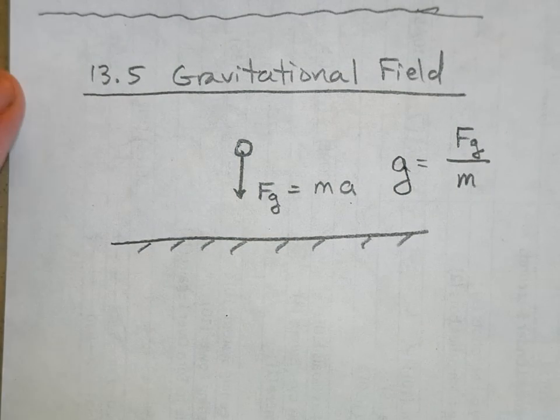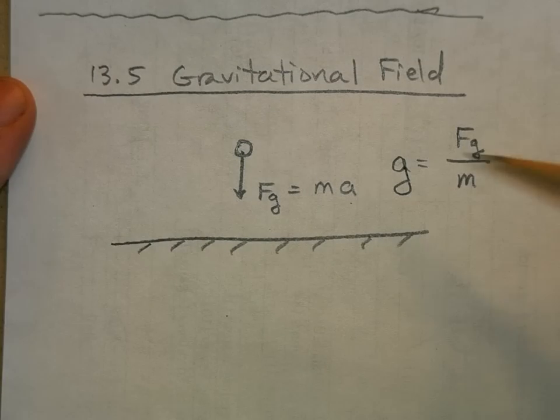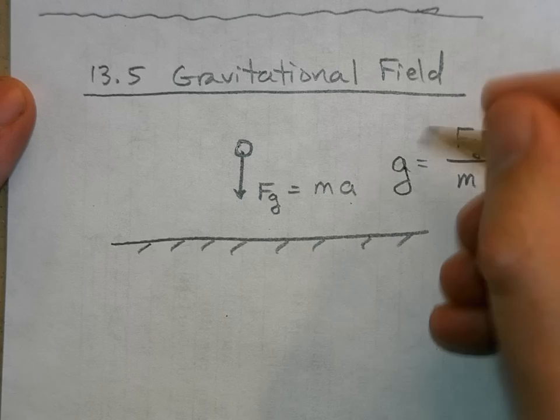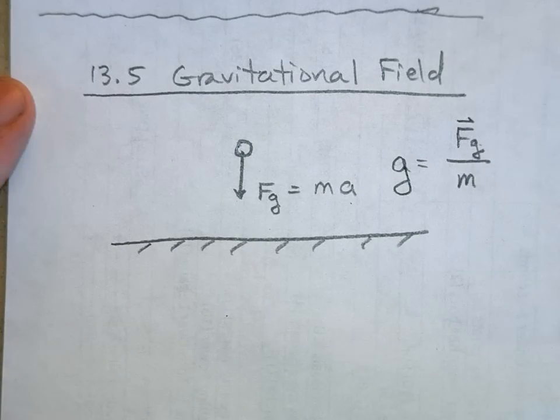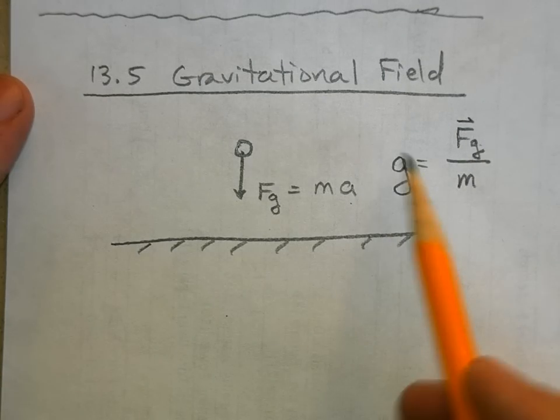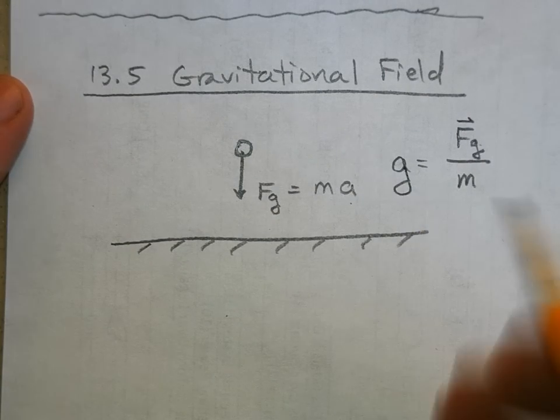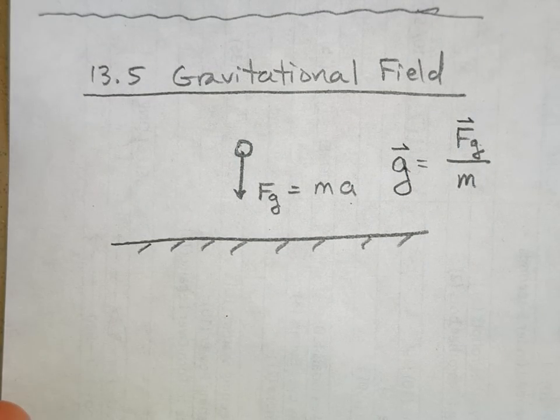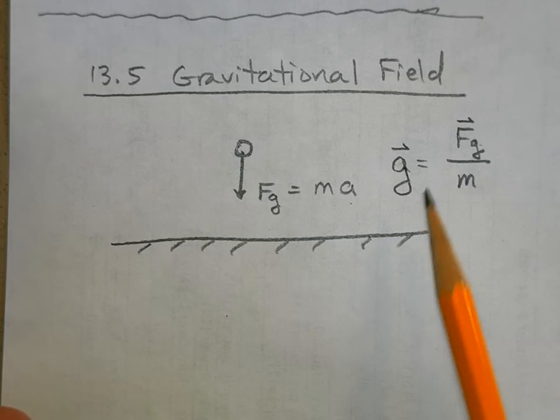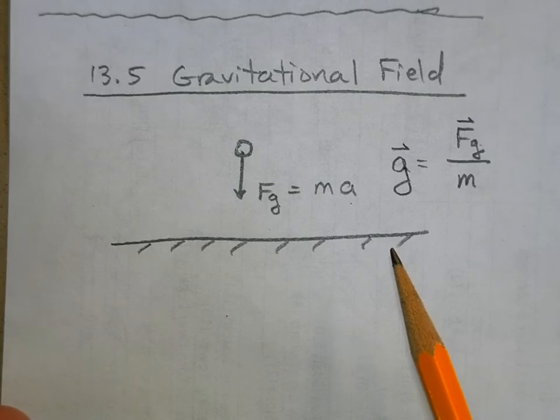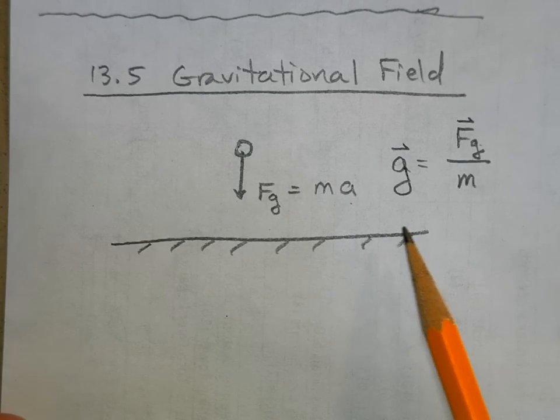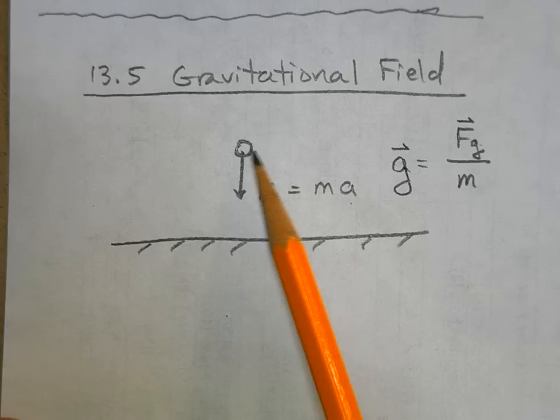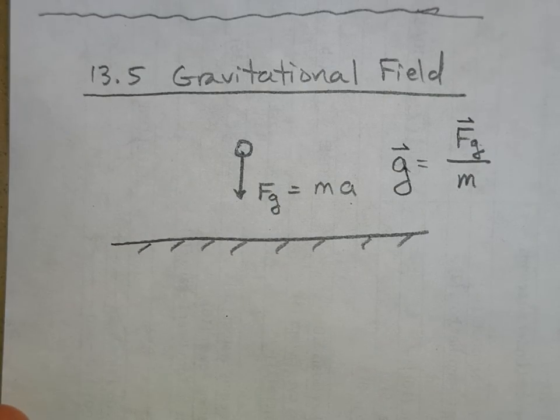This force of gravity is a vector, so it's got direction, and this acceleration of gravity has direction in the same direction. So far this year we thought of this as being in terms of the acceleration that you would get if you release that object and it fell down.